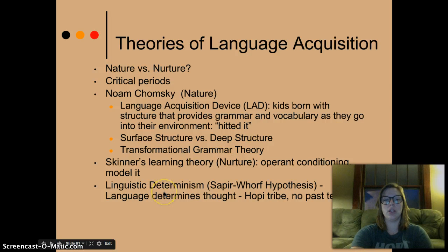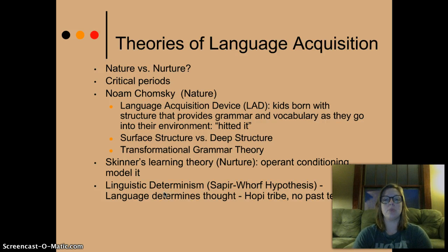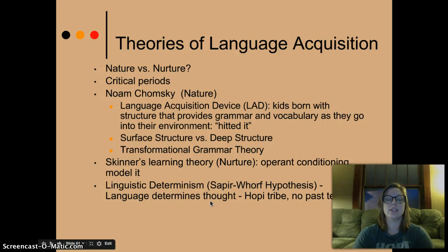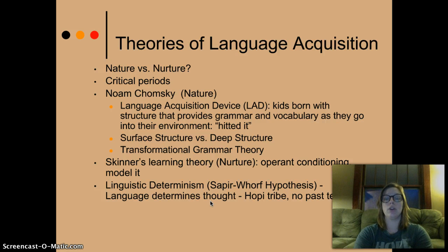Linguistic determinism is the Sapir-Whorf hypothesis, and it argues that your language determines your thought. One of their main case examples is the Hopi tribe — this tribe has no past tense in their language, and so they never think of the past, never talk about the past, never reflect upon the past. Is their language determining their thought capabilities? This is the argument of linguistic determinism — that your language and its parameters are prohibiting or encouraging certain thoughts, limiting thoughts in certain areas.